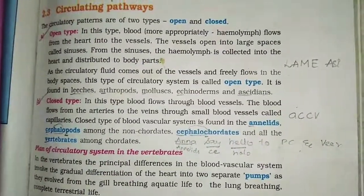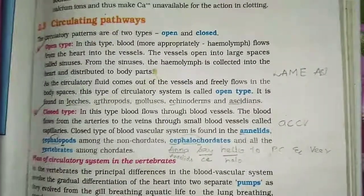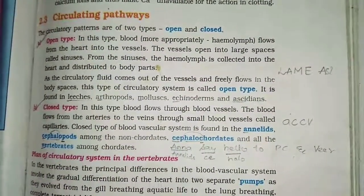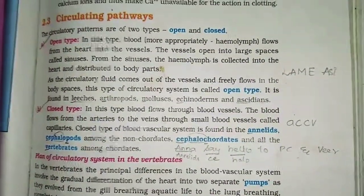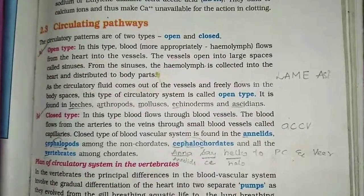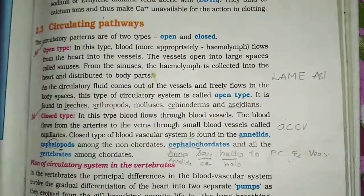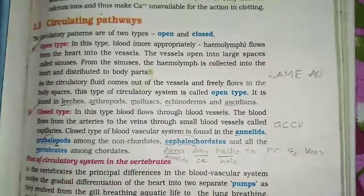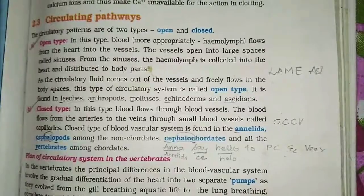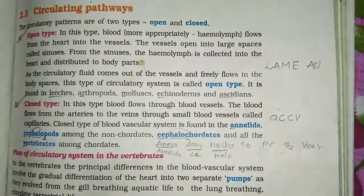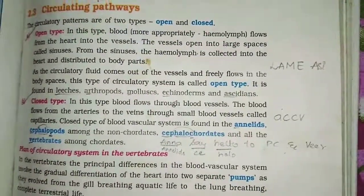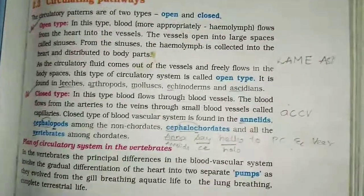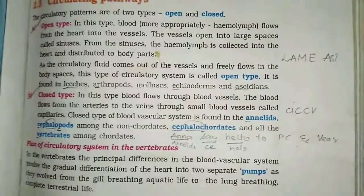We can group the animals, and if you know only the group name you can easily differentiate them. Here is a trick: open type of blood circulatory system is seen in Leeches, Arthropods, Mollusks, Echinoderms, and Ascidians. The mnemonic is 'LANE ACID' — removing the C from Ascidians. My friend's name was Asia, so I'm using that to remember this trick.